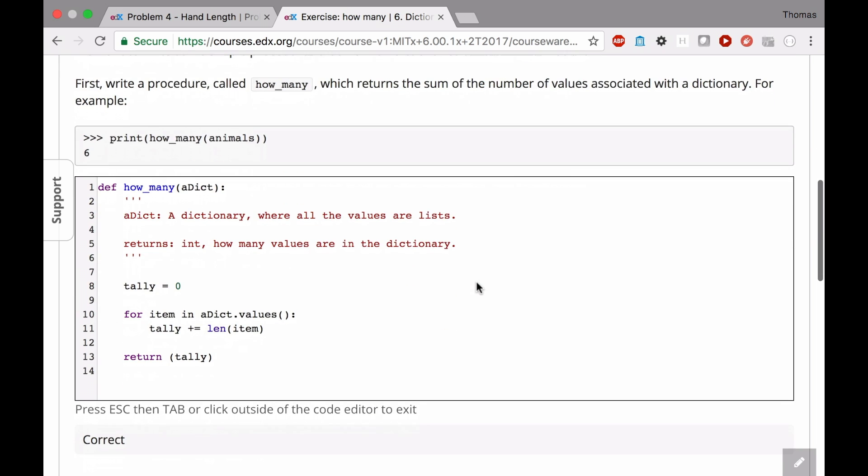and we had a function that looked like this. This was my answer. I think it's very similar to the given answer, probably similar to your answers. You have to have some counter. You iterate over the items in the dictionary's values, and then you add on that to your tally, and then you return the tally.